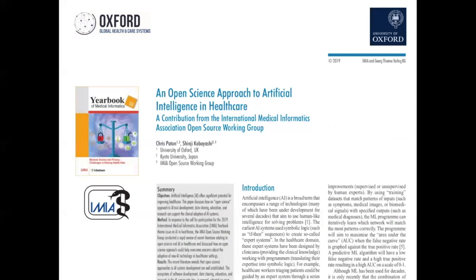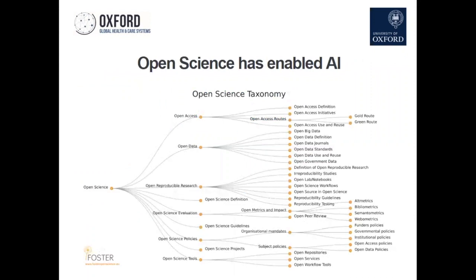This is the work we did — we're part of a group called the International Medical Informatics Association, and we have a working group around open source. We did some work last year on open data, and this year we wanted to write about open science as an approach to artificial intelligence in healthcare. Open science includes things like open access publishing, opening up data sets, making sure experiments are reproducible, having standard open protocols — all of which is becoming a standard approach to doing science. We wanted to see whether these ideas apply in the field of AI.